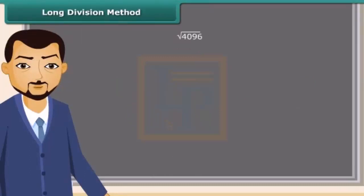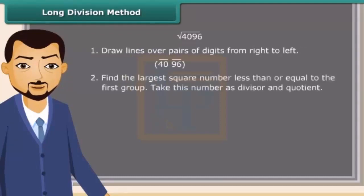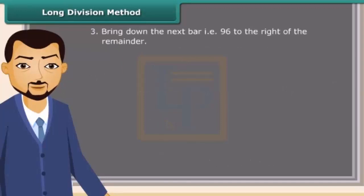For large numbers, the prime factorization method of finding square root becomes difficult. So we use long division method. Let us look at the steps. First of all, draw lines over pairs of digits from right to left. Next, find the largest square number less than or equal to the first group. That is 40, since 36 is less than 40. So we take 6 as the divisor and 6 as the quotient. Now subtract 36 from 39. After that, bring down the next bar, that is 96, to the right of the remainder. Now double the divisor.